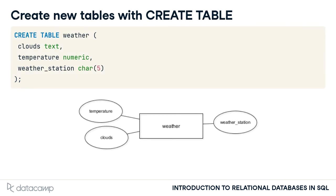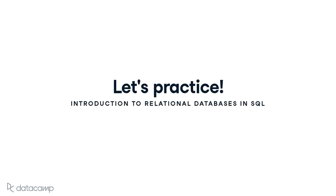For example, you could create a weather table with three aptly named columns. After each column name, you must specify the data type. There are many different types, and you will discover some in the remainder of this course. For example, you could specify a text column, a numeric column, and a column that requires fixed-length character strings with five characters each. These data types will be explained in more detail in the next chapter. For now, you will first create the four tables and then migrate data from the original table to them.